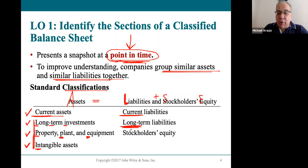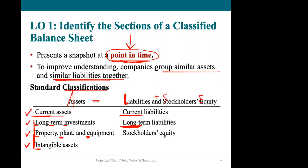Current and long-term for liabilities is based on the point in time at which the balance sheet is written. Stockholders' equity is not affected by these classifications — it's just not broken into anything.